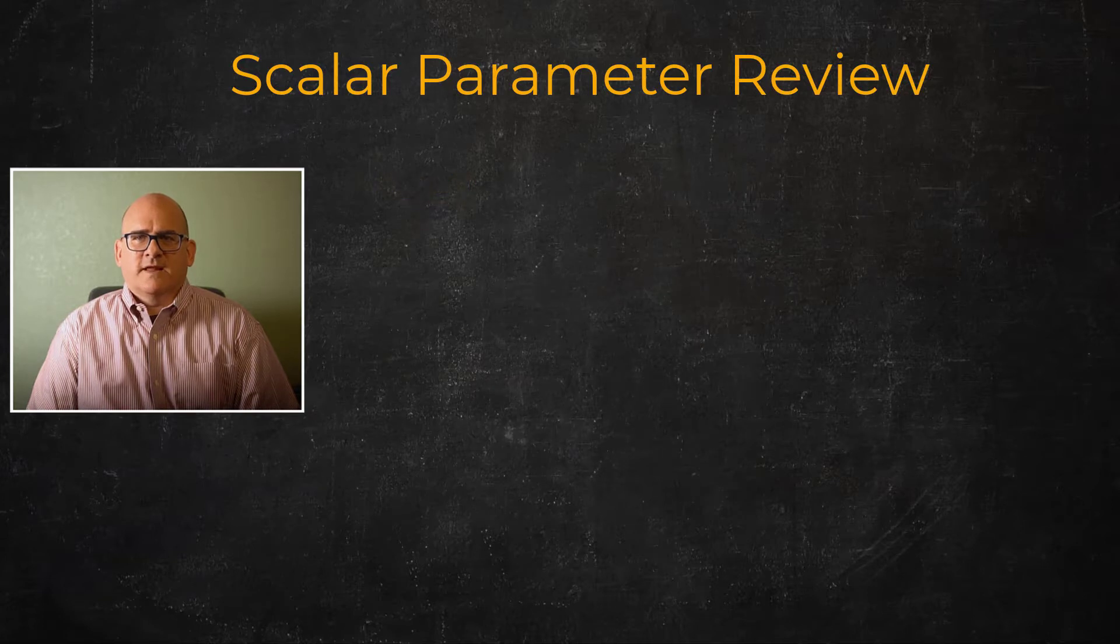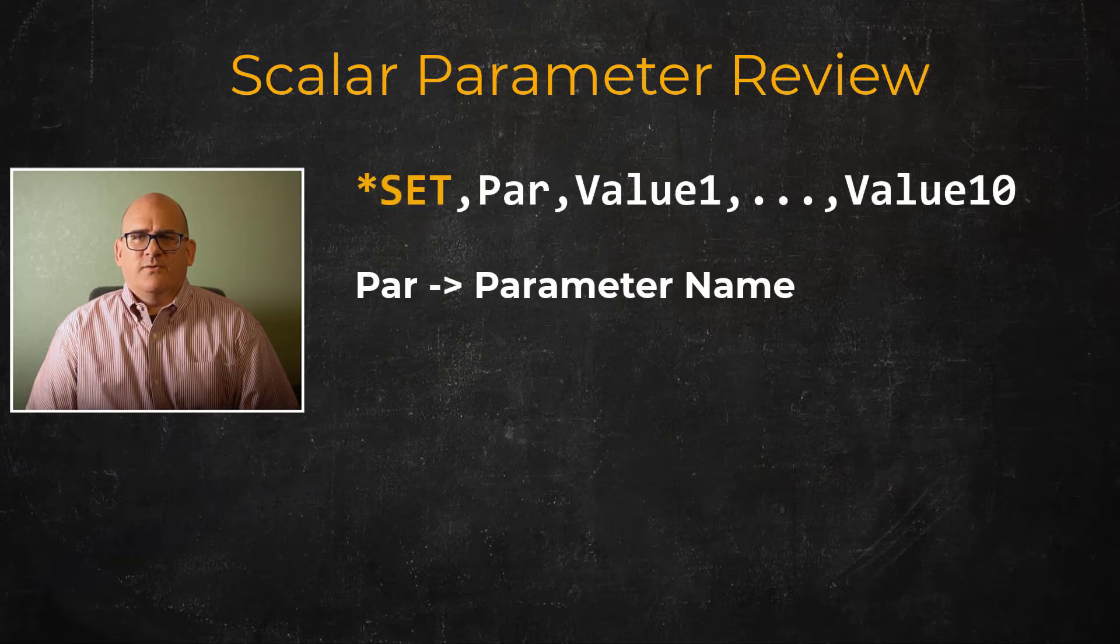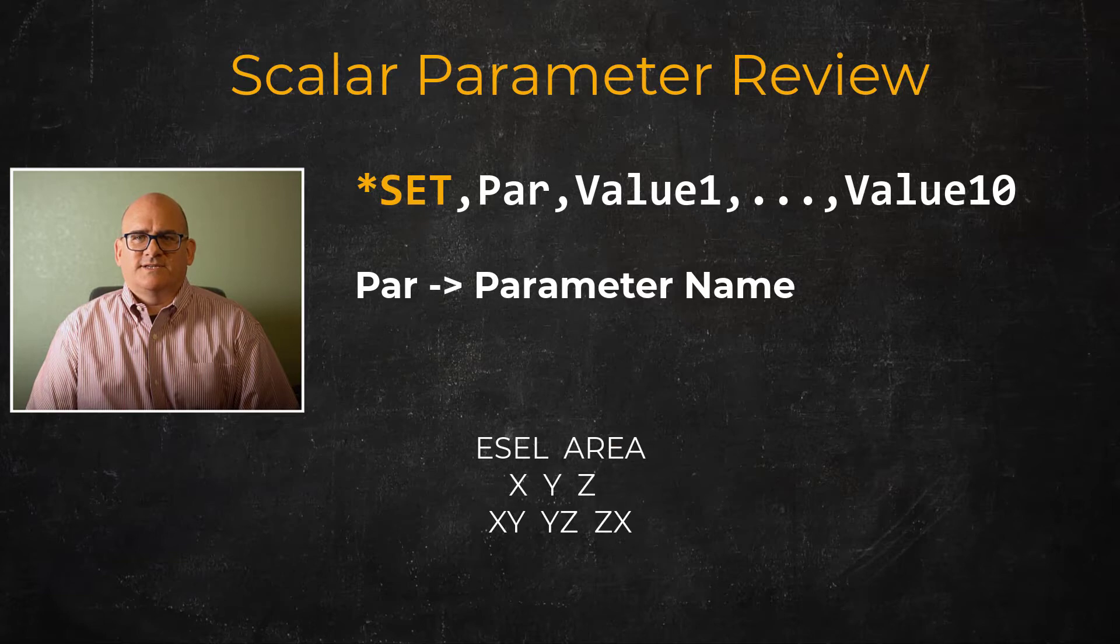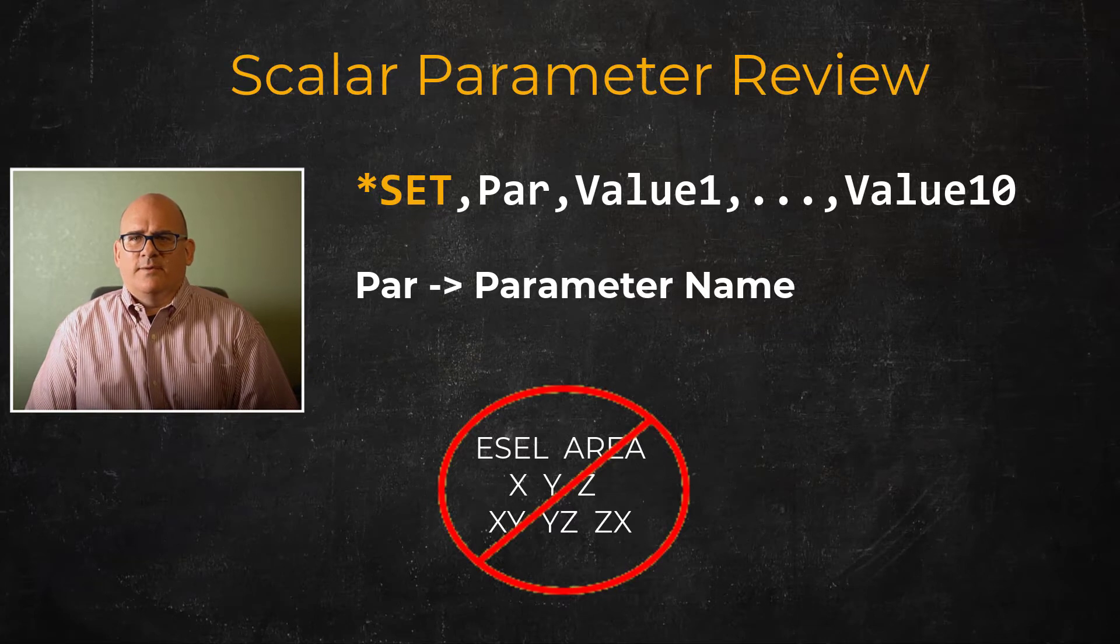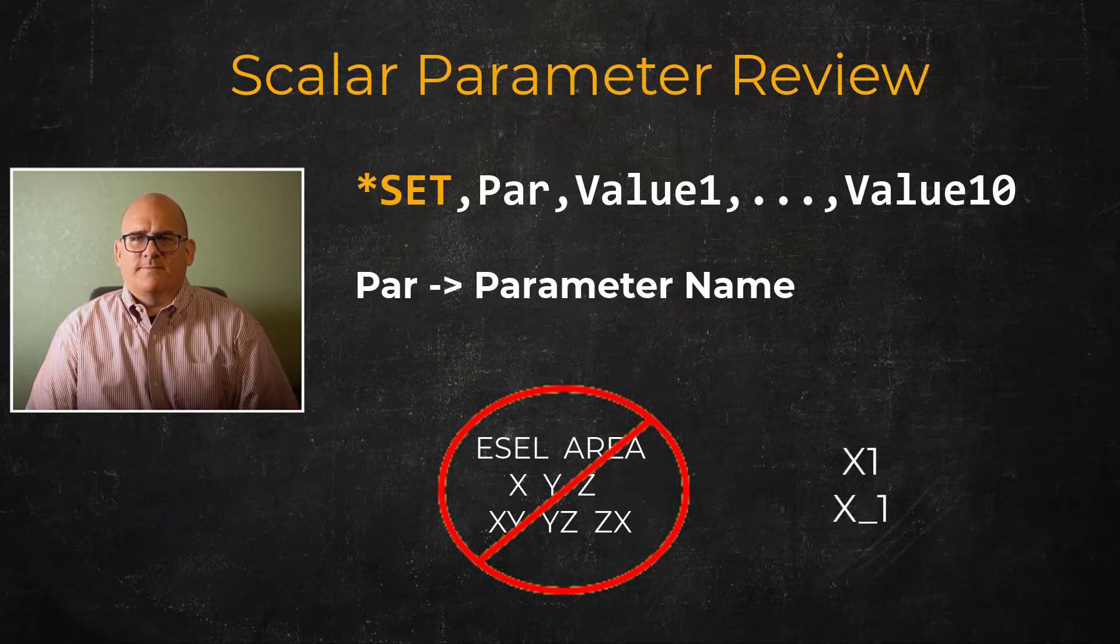As a general rule, we should stay away from Mechanical APDL names such as command names or field names of commands such as X, Y, Z, XY, YZ, ZX, etc. A good practice is to use either a number or underscore in the parameter name. For example, instead of X we could use X1 or X_one.